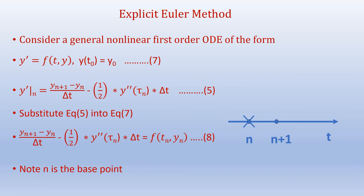Now consider a general nonlinear first-order ODE of the form y' = f(t, y), with initial condition y(t₀) = y₀. Substituting the forward difference approximation into the ODE, we get (y_{n+1} − y_n)/Δt − (1/2)·y''(τ_n)·Δt = f(t_n, y_n). Note that n is the base point.